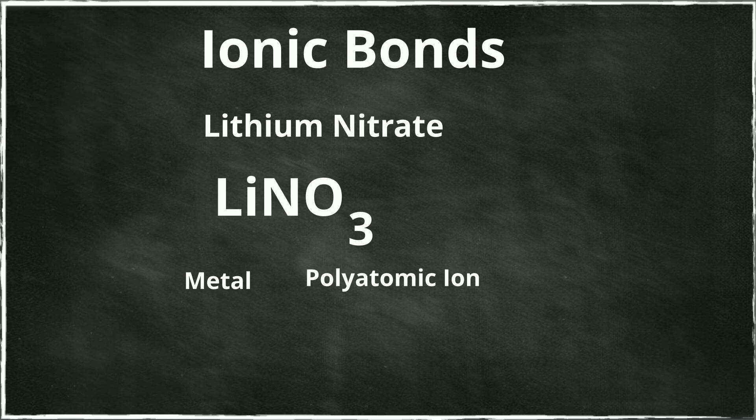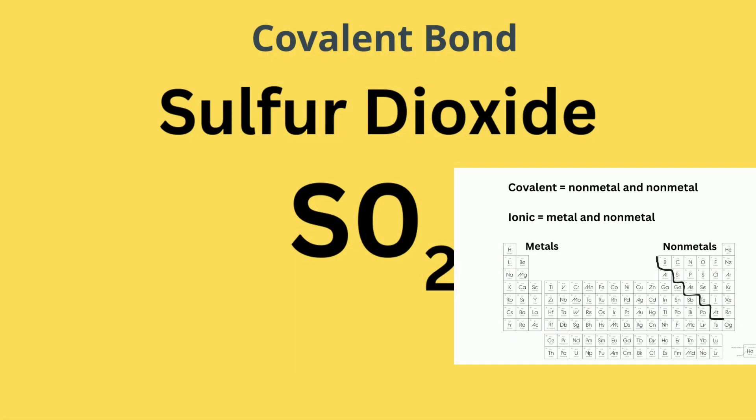But again, it's a metal and nonmetal bonding together, so it's an ionic bond. Now, what about sulfur dioxide? It's made of sulfur and oxygen, which are both nonmetals, so it's a covalent bond.